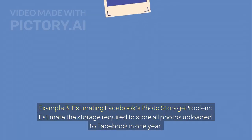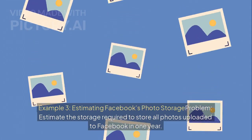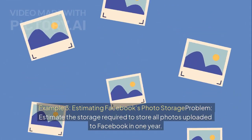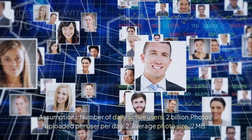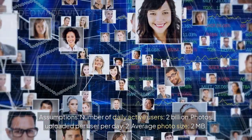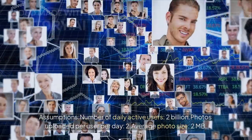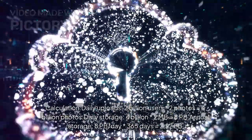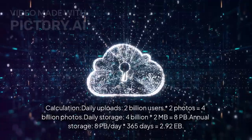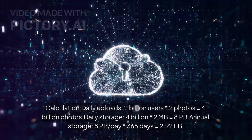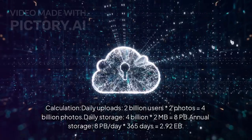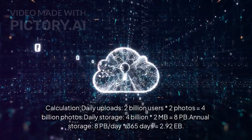Example 3: Estimating Facebook's photo storage. Problem: estimate the storage required to store all photos uploaded to Facebook in one year. Assumptions: 2 billion daily active users, 2 photos uploaded per user per day, average photo size 2 MB. Calculation — daily uploads: 2 billion × 2 = 4 billion photos. Daily storage: 4 billion × 2 MB = 8 PB. Annual storage: 8 PB per day × 365 days = 2.92 exabytes.